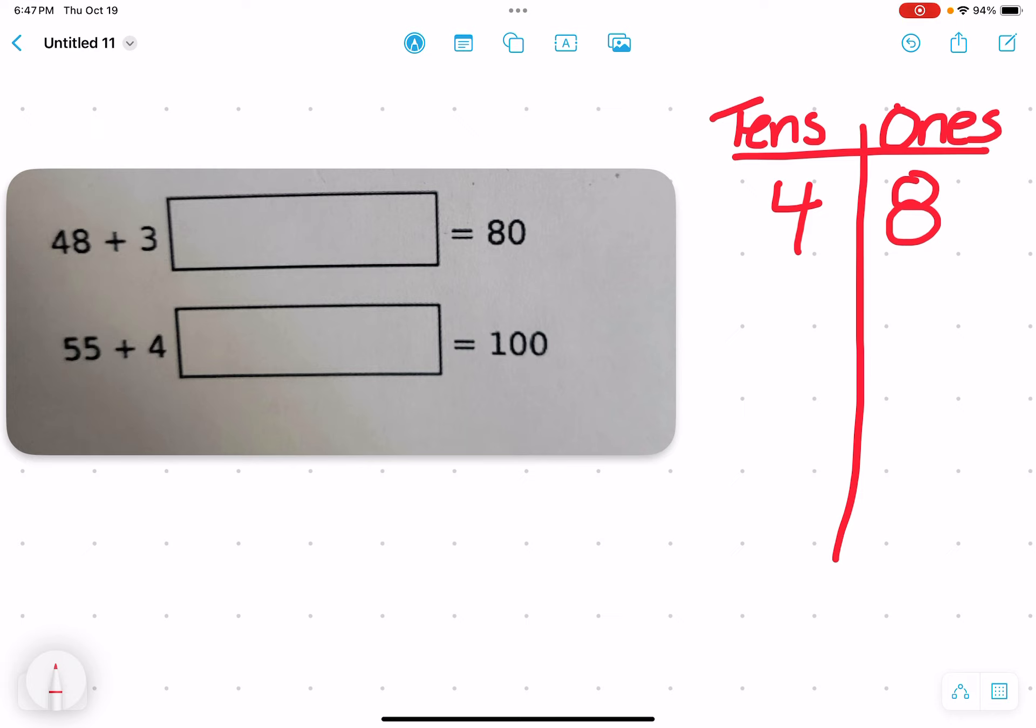I noticed that this 3 in our equation is in the tens spot, so I'm going to put 3 in the tens spot. But we're missing a number, so I'm going to put a question mark for the number that's in the ones place. It's going to equal 80 in all.